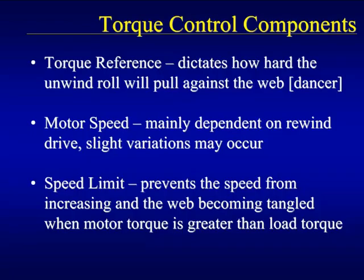Let's look at the torque control components on the winder system. First, the torque reference indicates to the drive how hard the unwind roll will pull against the web — the source for this signal is the dancer control, since it measures the web tension. Second, the motor speed on this application is mainly dependent on the rewind drive, since it is set up for speed control; however, slight variations in speed may occur when web tension drops and slack enters the web. Third, a speed limit must be considered — if the web were to break, the unwind roll would start to turn in the opposite direction, and a speed limit would prevent the roll from winding in the opposite direction.